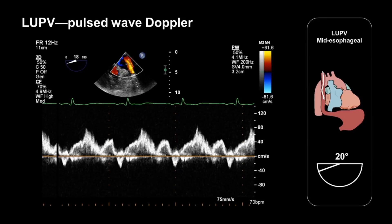Here's the characteristic appearance of pulsed wave Doppler in the left upper pulmonary vein, and the flow pattern has three distinct components. First we have the S wave, which corresponds to antegrade flow in the pulmonary vein entering the left atrium during ventricular systole. Immediately following the S wave we have the D wave, which corresponds to a further phase of antegrade flow entering the left atrium during ventricular diastole. After the D wave we have the A wave, or AR wave, which corresponds to retrograde flow back up the pulmonary vein during atrial contraction.